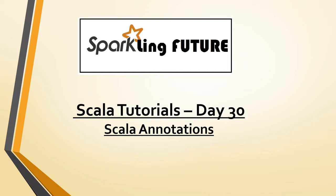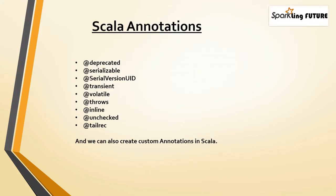A simple annotation has the form: you use the at-sign followed by the annotation name, and it can or cannot have parameters. Annotations can be applied to declarations, definitions, variables, and expressions. For example, for methods we mainly use @deprecated, for classes we use @serializable, for expressions we use @unchecked, for types we use @local, and for variables we use @transient or @volatile.